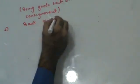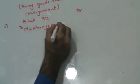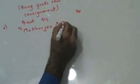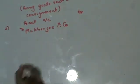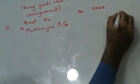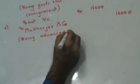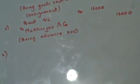An advance of 16,000 was received from Mukherjee and Company. Received — debit what comes in. Money is coming in, so bank account debit. Debit the receiver, credit the giver — to Mukherjee and Company. Amount: 16,000. Being advance received.